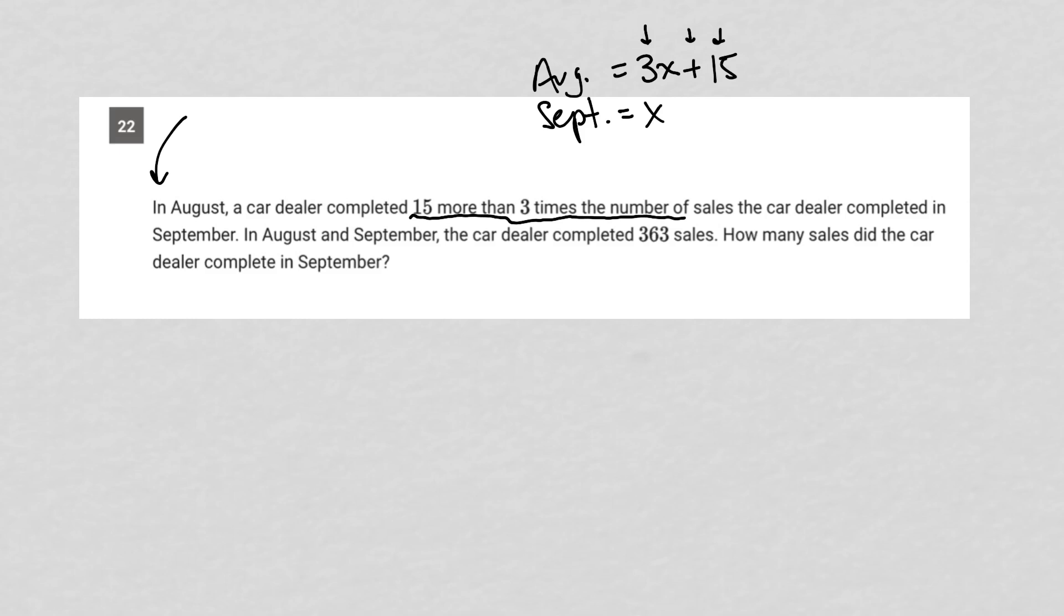The next sentence says in August and September, the car dealer completed 363 sales. So that means we're combining our equations. We have August, 3X plus 15, plus September, plus X, equals 363. How many sales did the car dealer complete in September?